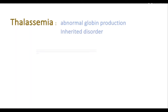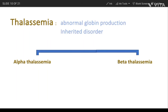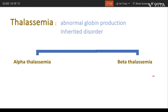Thalassemia is an abnormal globin production — it is an inherited disorder. It is divided into alpha thalassemia and beta thalassemia. Alpha thalassemia occurs due to mutation in the alpha globin gene, and beta thalassemia occurs due to mutation in the beta globin gene. We will discuss genes, symptoms, and lab results for each type.